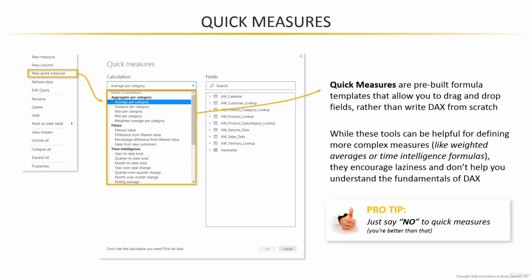Next up we're going to compare implicit versus explicit measures and practice writing our first true measure in our AdventureWorks report.